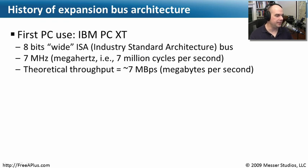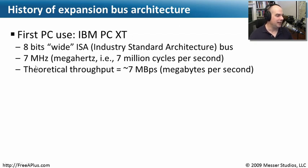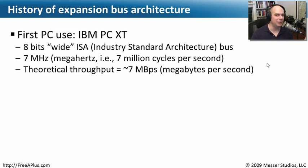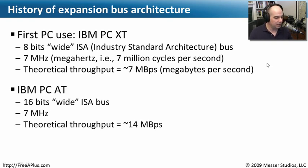We first started using these expansion buses in the IBM PC XT — the original PC. It was an ISA bus, an Industry Standard Architecture bus that was 8-bits wide. The idea was that the manufacturer could make the computer, but third parties could make expansion cards that fit into this bus using this industry standard architecture. Devices on this bus could transfer traffic at 7 megahertz, meaning we could send 7 megabytes per second through the system — not a lot of throughput, but that's what the original IBM PC had. The next computer, the IBM PC-80, had a bus twice as big — 16 bits wide — still running at 7 megahertz, which essentially doubled the theoretical throughput. That's how the width and speed of the bus together have a real impact on how much traffic we can transfer.